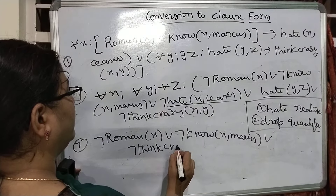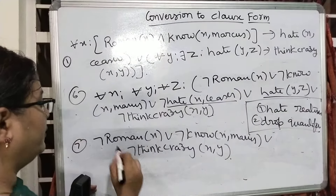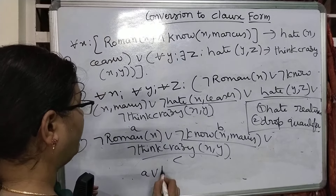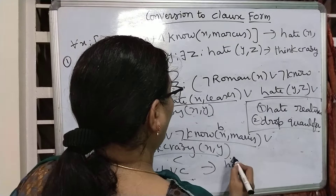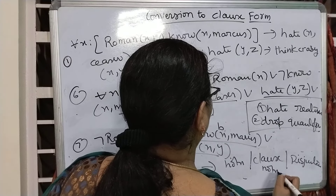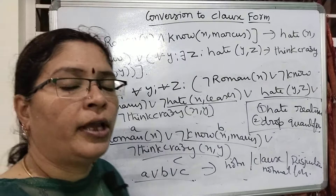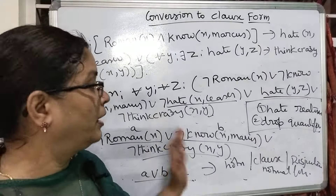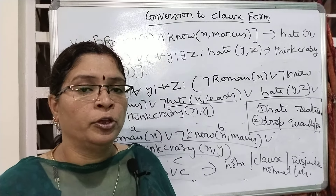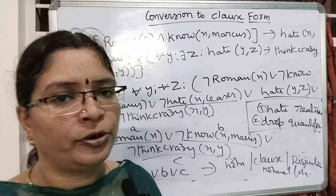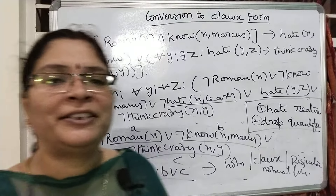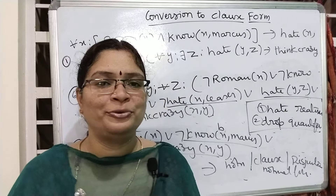This is in the form of the disjunctive normal form — this term is in the form of A or B or C, which is the horn form, clause form, or disjunctive normal form. This is a good example of conversion to the clause form, to be done before going to resolution. In the coming video, we will talk about more things regarding how resolution works. Please subscribe to the channel 'Intelligible Tutorials'. Thank you.